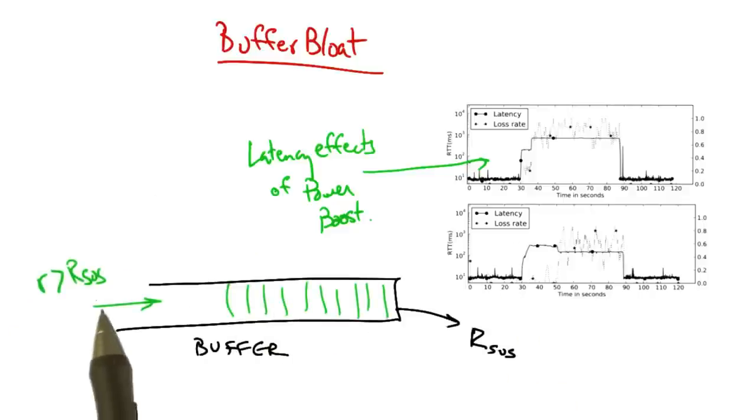In the example we explored, the sender could send at a rate that was bigger than the sustained rate R without seeing packet loss.